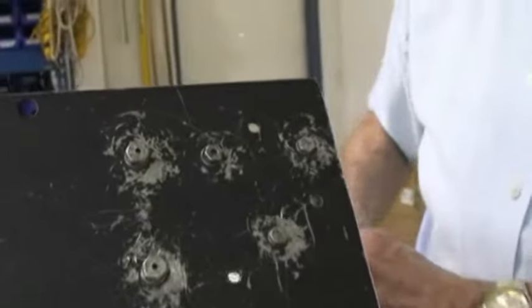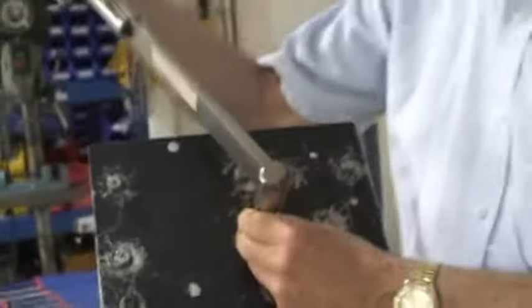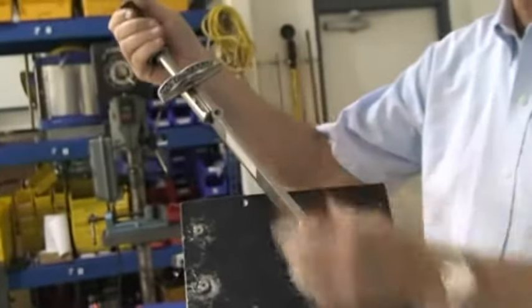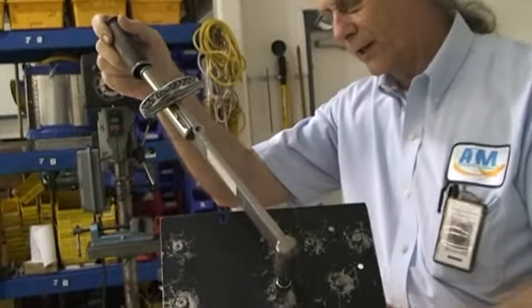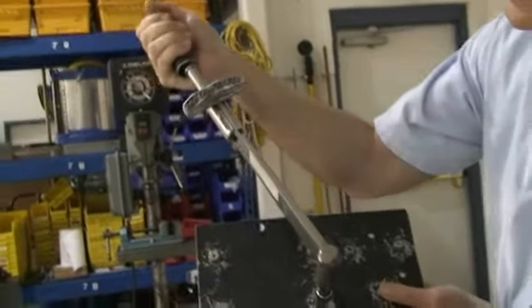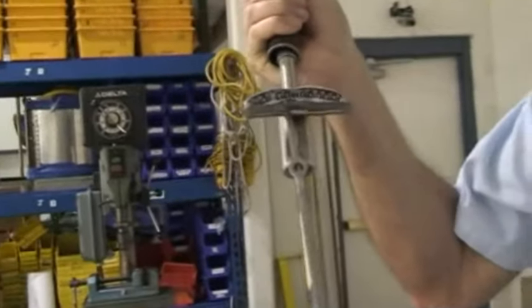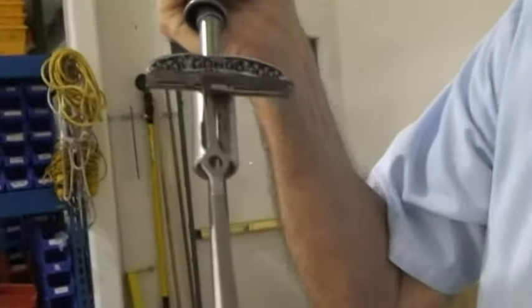Also, you want to show us how to use the other torque wrench? This is another torque wrench we use in school. This is deflecting beam. It does not click. You do have to look at it and you pull it until you get the value that you want. Okay. And then stop.